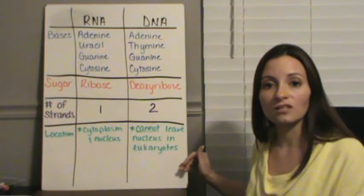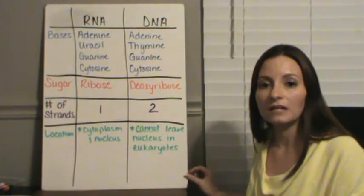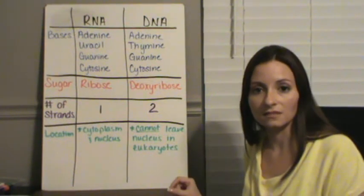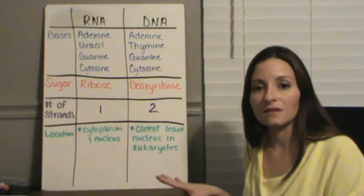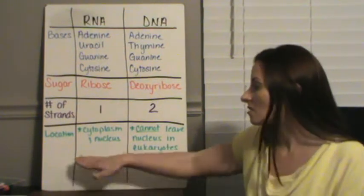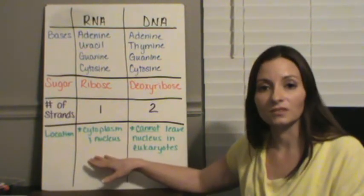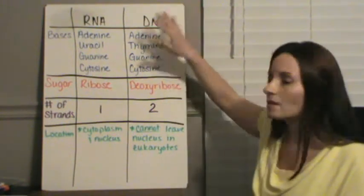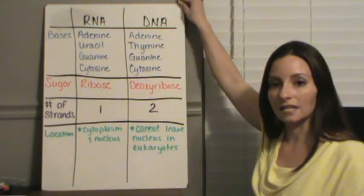And finally, the location of where they can go. In eukaryotes specifically, DNA cannot leave the nucleus. If it is something that is outside of the nucleus, it must be RNA, because RNA can actually leave the nucleus once it's made and go into the cytoplasm.